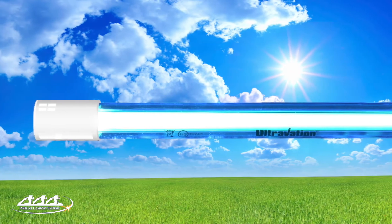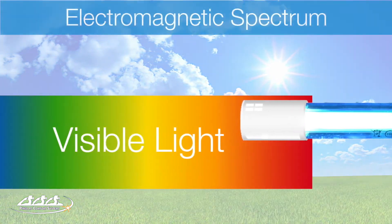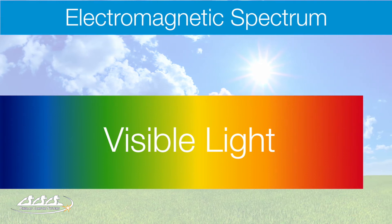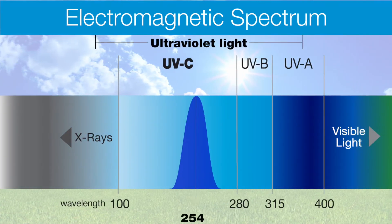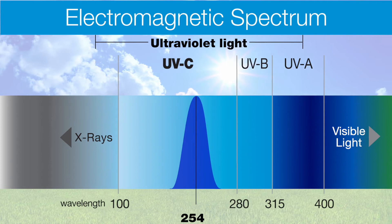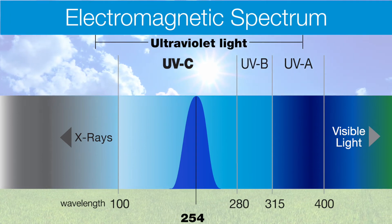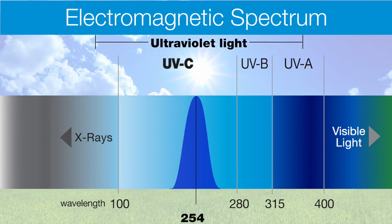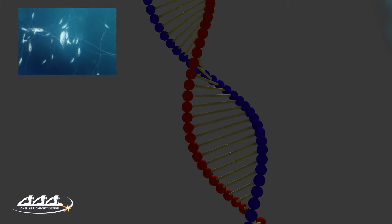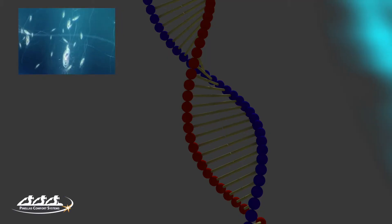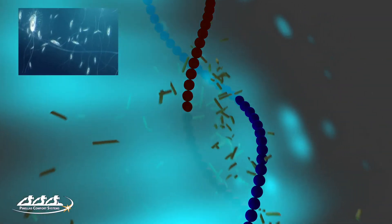UV light is a natural disinfectant and a component of sunlight. Scientifically, UV is a part of the electromagnetic light spectrum falling just below the visible light frequencies, and the germicidal wavelength of UV light centers on 254 nm. UV light works as a disinfectant because it is able to penetrate cell tissue and break up cellular DNA.